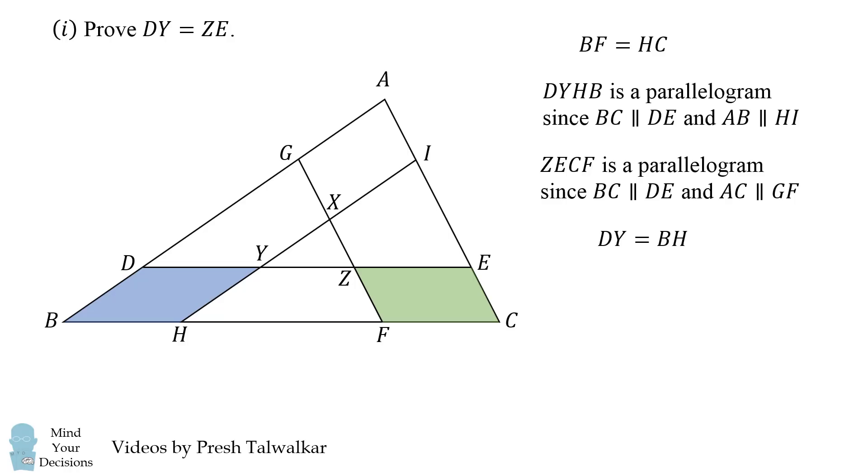So now we start out that DY is equal to BH because they're opposite sides of a parallelogram. Then BH is equal to BC minus HC, so this is equal to BC minus BF. But BC minus BF is equal to FC, and then FC is equal to ZE because they're opposite sides of a parallelogram. So we've proven that DY is equal to ZE and we're done with the first part of this question.